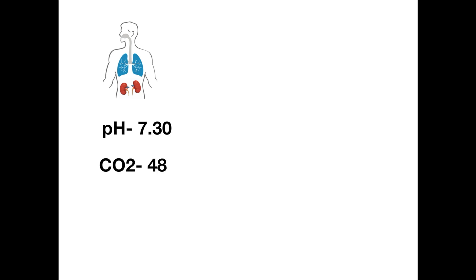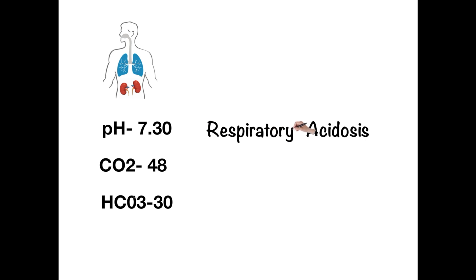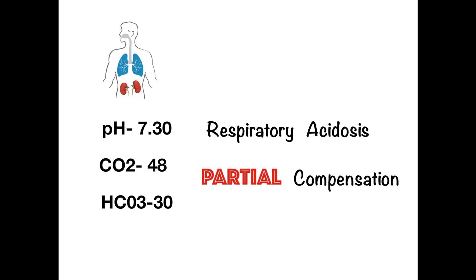Next example: pH is 7.30, CO2 is 48, and bicarbonate is 30. We know automatically this is acidosis. CO2 is 48 — normal range is 35 to 45 — so this is respiratory acidosis. Now let's see if there's compensation. Bicarbonate is 30, which means the body tried to compensate by increasing the amount of bicarbonate in the system. There is compensation, but was it enough to bring the pH back to normal? No — so this is a partial compensation.